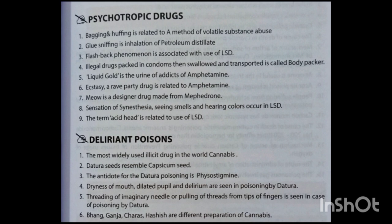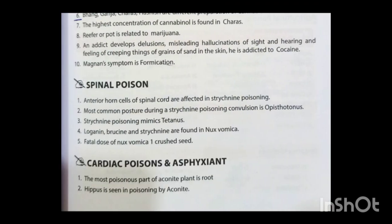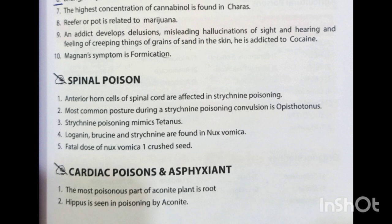Deliriant poisons. The most widely used illicit drug in the world is cannabis. Datura seeds resemble capsicum seeds. The antidote for datura poisoning is physostigmine. Dryness of mouth, dilated pupils, and delirium are seen in datura poisoning. Threading of an imaginary needle or pulling of thread from the tips of fingers is seen in datura poisoning. Bang, ganja, charas, and hashish are different preparations of cannabis.